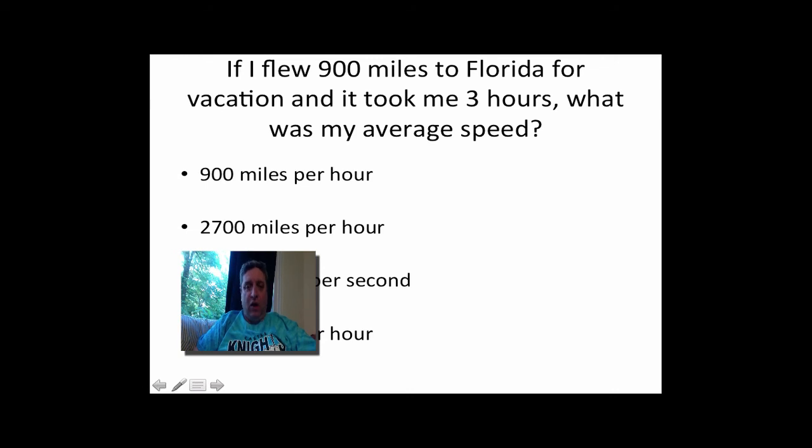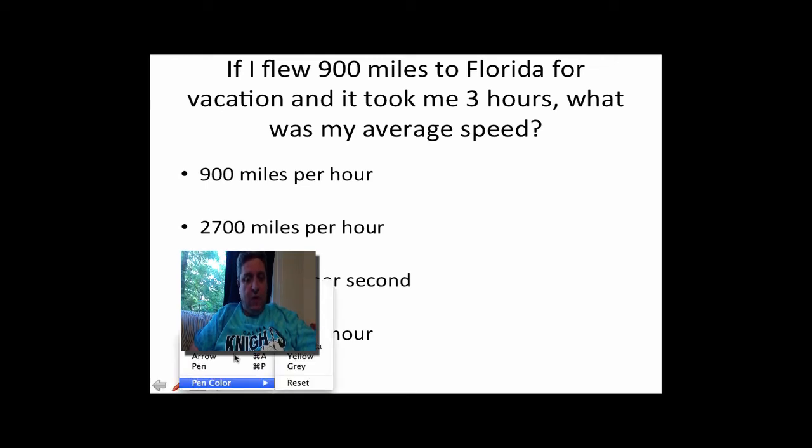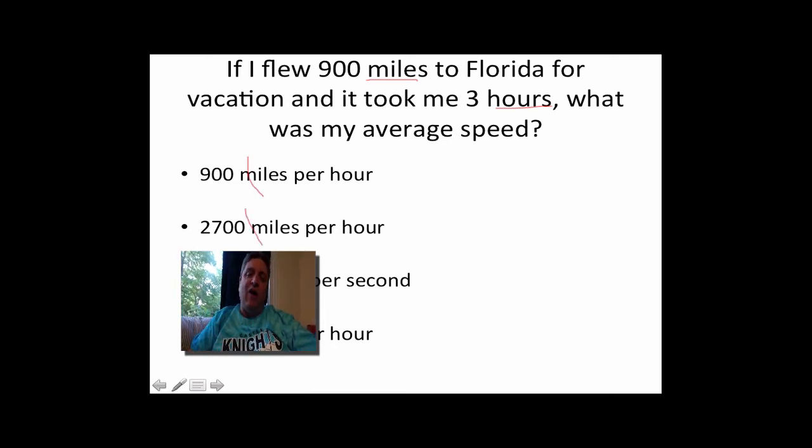If I flew 900 miles to Florida for vacation and it took me three hours, what was my average speed? The speed is distance divided by time. So 900 divided by 3. I'm dividing, so the key word for division is per. It's miles divided by hours, so miles per hour. 300 is the right number, but meters per second is not the same thing as miles per hour. I got to look at my units. So the right answer is 300 miles per hour.